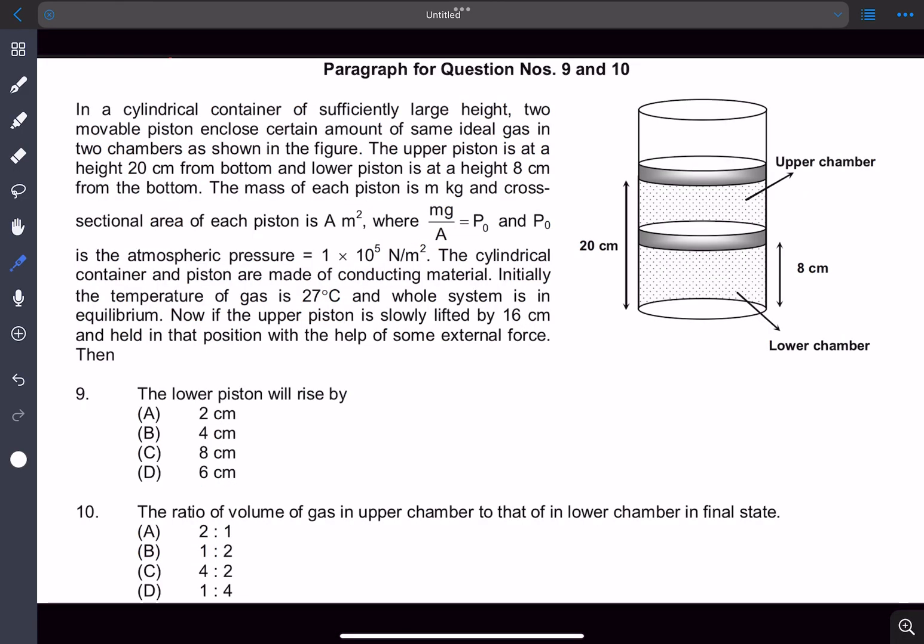The problem statement is that we have been given a cylindrical container of sufficiently large height. It has two movable pistons that enclose certain amount of same ideal gas in two chambers as shown in the figure.